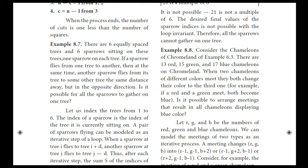Next is Example 8.8, the Chameleon of Chromeland problem from Chapter 6. There are 13 red, 15 green, and 17 blue chameleons. When two chameleons of different colors meet, they both change to the third color. The question is whether it is possible to arrange meetings so all chameleons display blue.